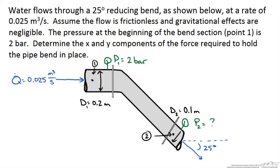We want to determine the x and y components of the force required to hold the pipe bend in place. For the sake of our system we will say that positive y is up and positive x is to the right.